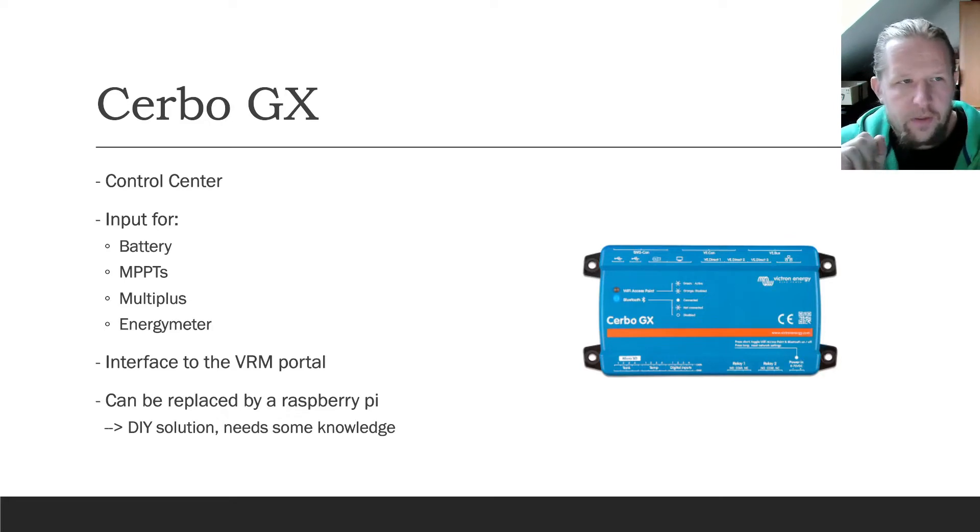The Cerbo GX is the control center of the system. It has multiple inputs, so you can connect the battery, MPPTs, MultiPlus, Energy Meter, your local network or by Wi-Fi as you like. And it's also the interface to the VRM portal. So when you ever see the VRM portal, and you can see it in many videos from other users or from me also, the data always gets shipped by the Cerbo GX or it can be replaced by a Raspberry Pi. The software that runs on the Cerbo GX is called Venus OS and this is open source from Victron. It's a very good thing and so you can run it also on the Raspberry Pi, but it's a do-it-yourself solution and it needs some knowledge how to connect the different modules. It's not out of the box as with the Cerbo GX.